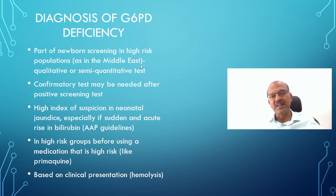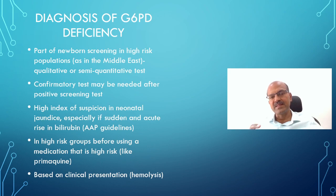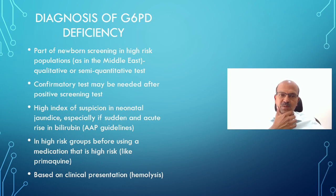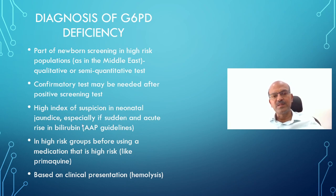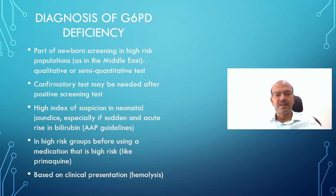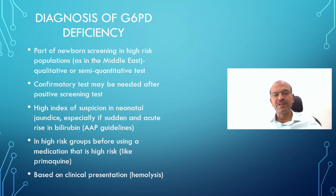Newborn screening in the Middle East, for example, includes G6PD as part of the panel — it is qualitative or semi-quantitative. Repeat testing is only needed where there is no family history and the test is borderline, though most screening reports advise repeating after 2-3 months with a quantitative lab test. There is a high index of suspicion in neonatal jaundice where jaundice rises suddenly or ancestry suggests a risk population, even if only one parent is from that population. Vitamin K has been implicated but there is no change in recommendations for vitamin K administration even in G6PD-deficient babies.